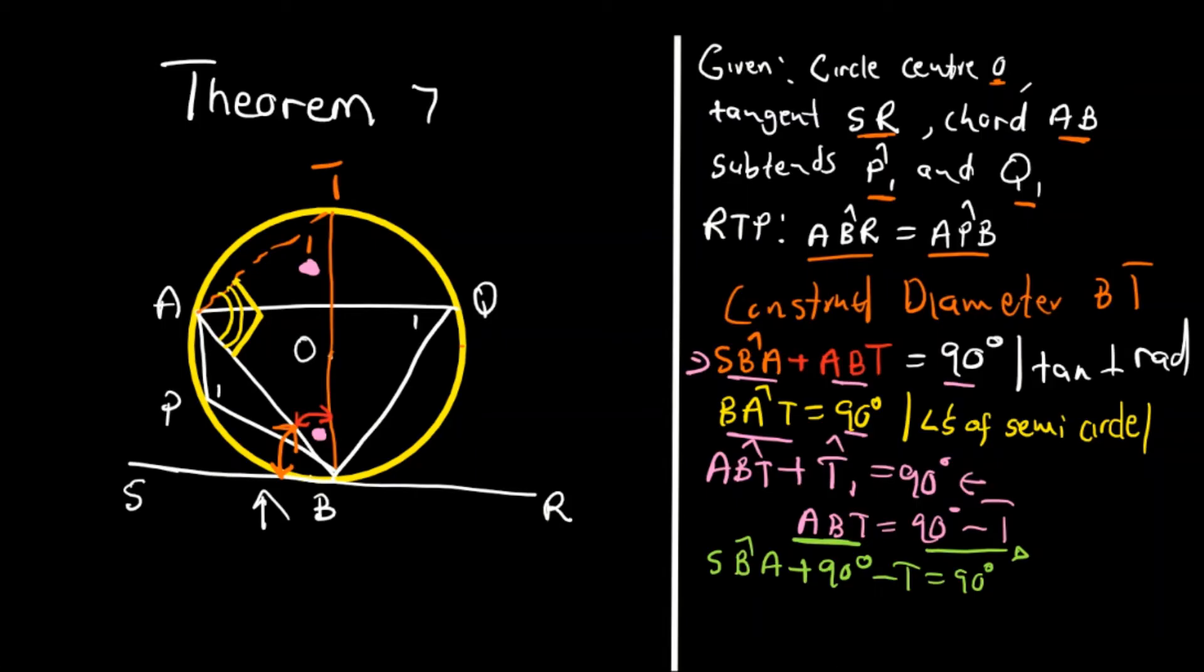So the 90 degrees will go away, meaning that SBA is equal to T, T1.